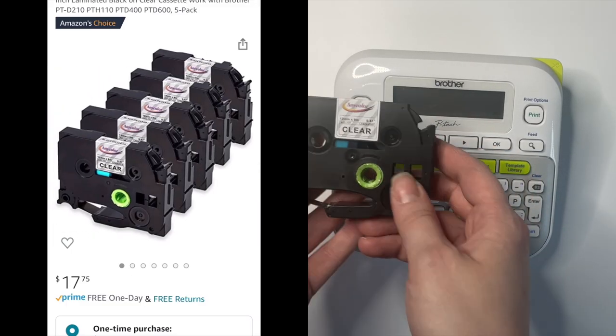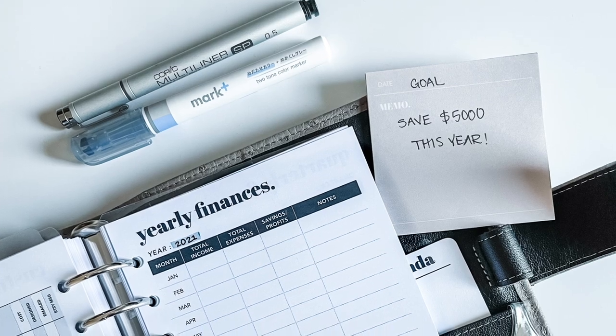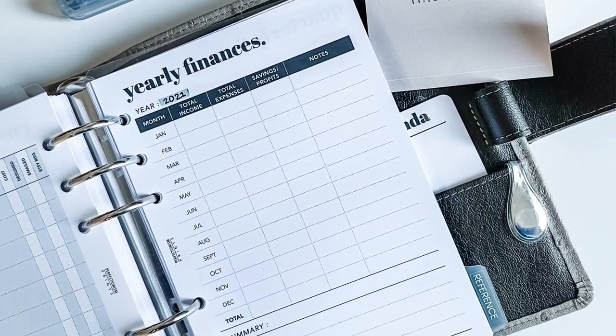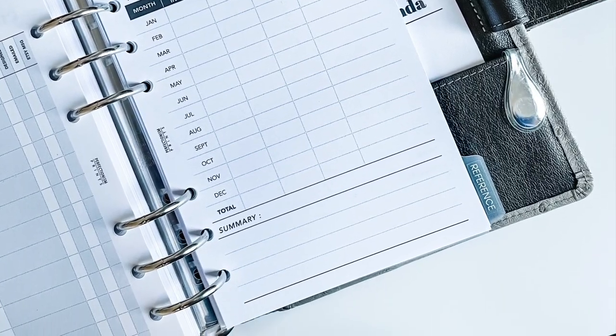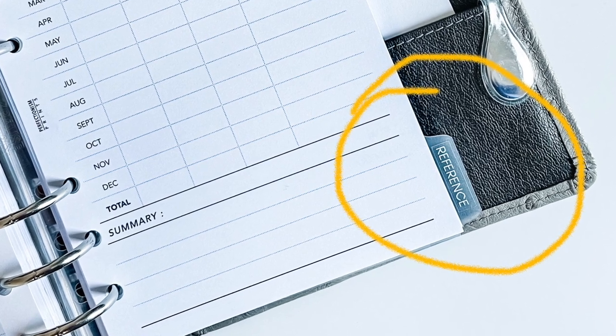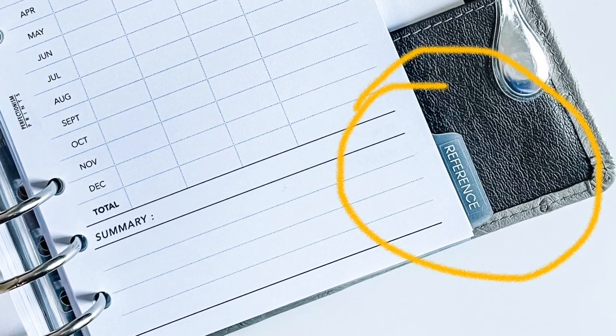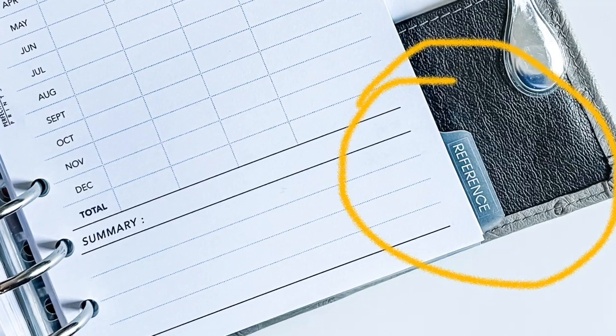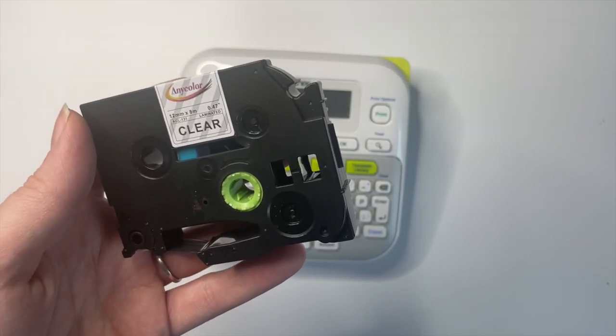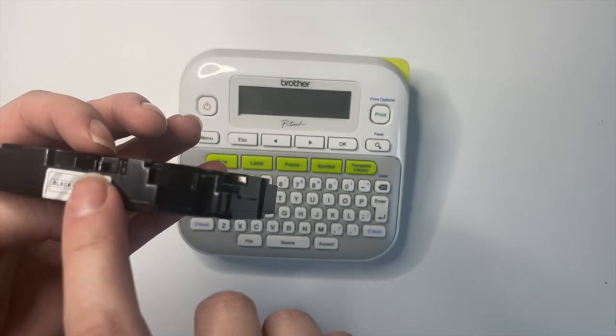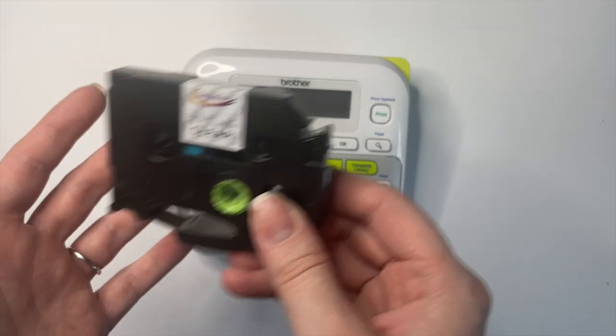You can get a lot of different types of tape for it. Because I use a darker colored planner, I really like to have the white text because I think it stands out better against the black of my planner. When I'm using a lighter planner, I prefer to use black on clear.